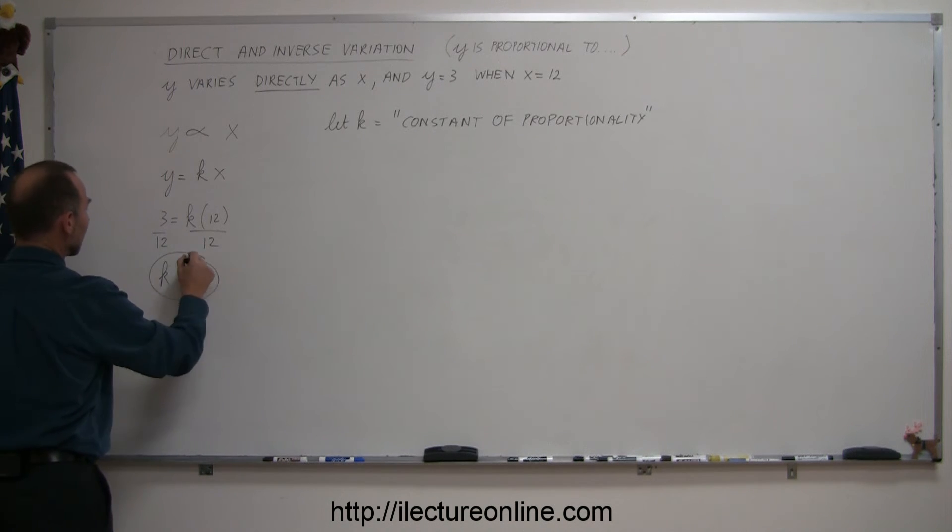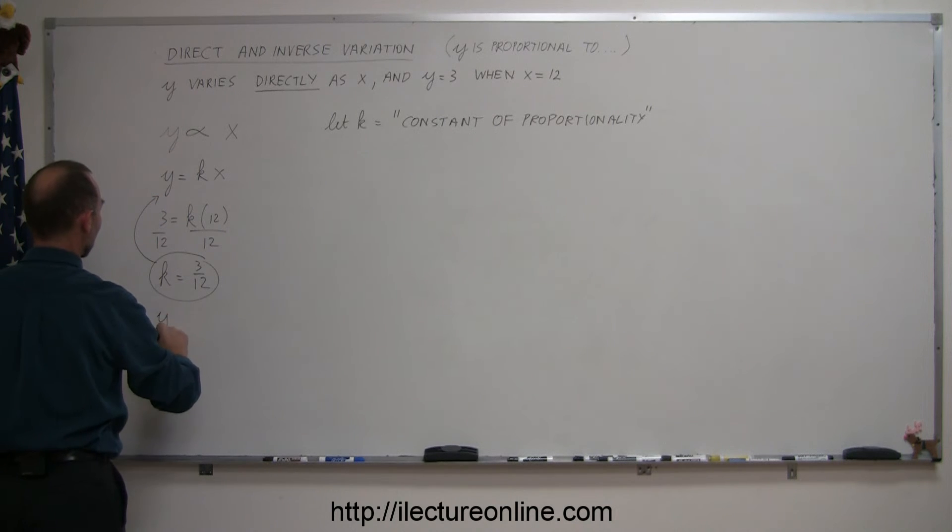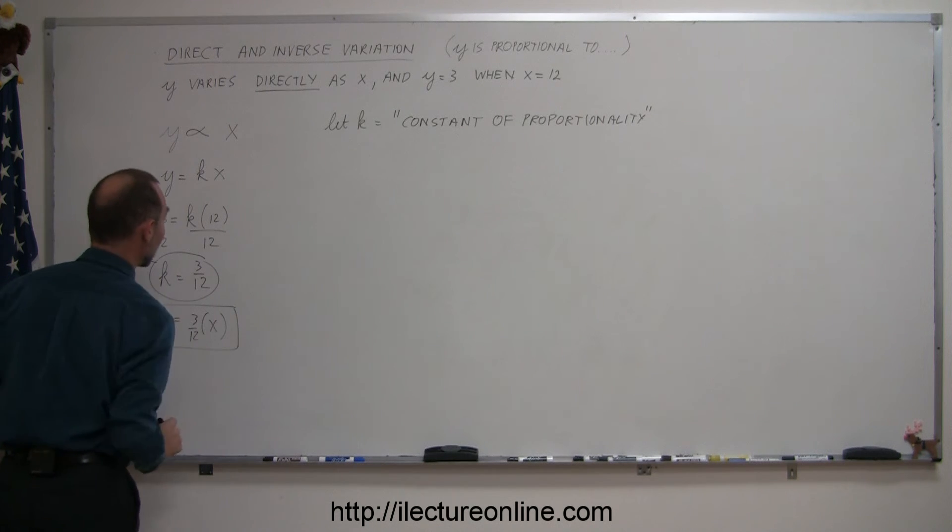Now that we have a constant of proportionality, we can now plug that back into our equation and now we can write that y is equal to 3 over 12 times x. And there's our equation.